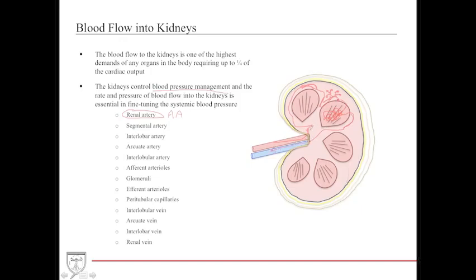This sequence is often tested, so remember the hallmarks: renal artery, segmental, interlobar, arcuate, interlobular on the arterial side; then afferent to efferent, peritubular capillaries, then interlobular, arcuate, interlobar veins on the venous side. Although the kidneys are retroperitoneal abdominal structures, they drain to the IVC — not the portal venous system.